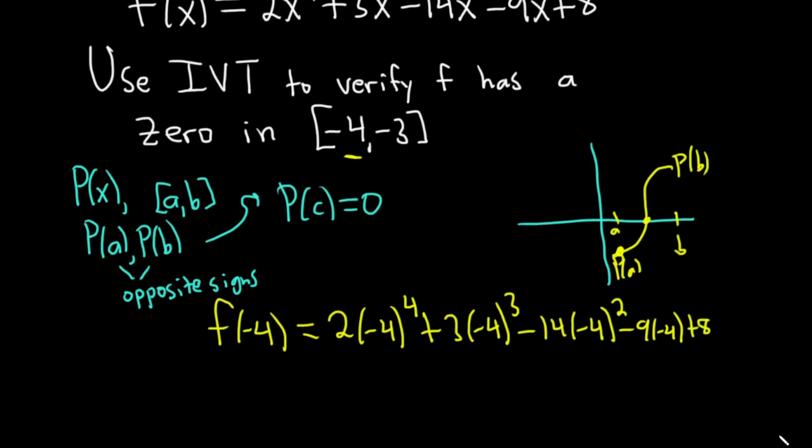So if you put this in a calculator and you try to evaluate, you should get, if I did this correctly, check my math, you should get 140. So f of negative 4 is 140.